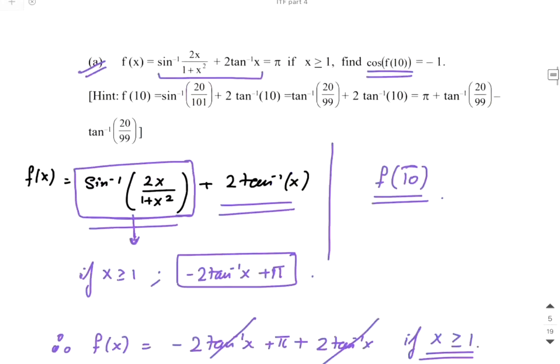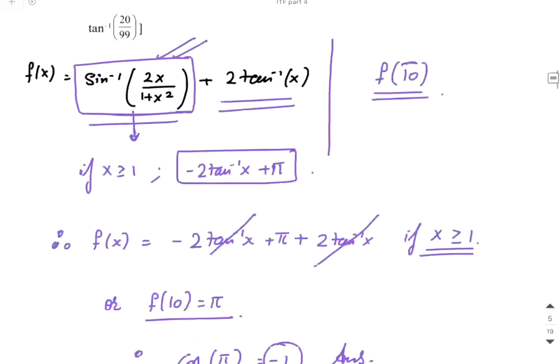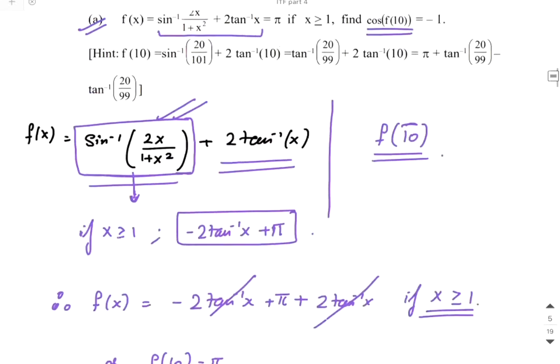Because I remembered this branch, we directly got the answer. If the branch was not remembered, it would take at least 1.5 minutes to simplify. Right now we did it within a few seconds. So forget f(10) — even f(100) would have been no problem. Clear to all?